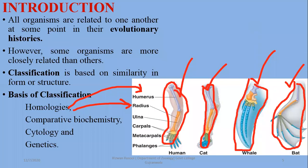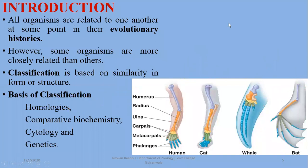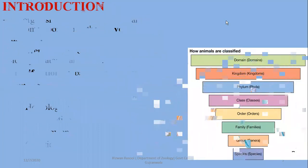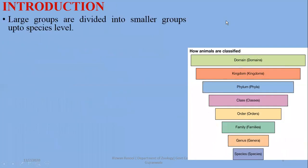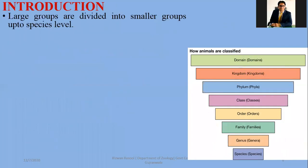So these are four bases of classification which you have to remember and memorize — they can be asked as short questions. In the introductory part, there are also units of classification. Larger groups are divided into smaller groups, going down to the species level.